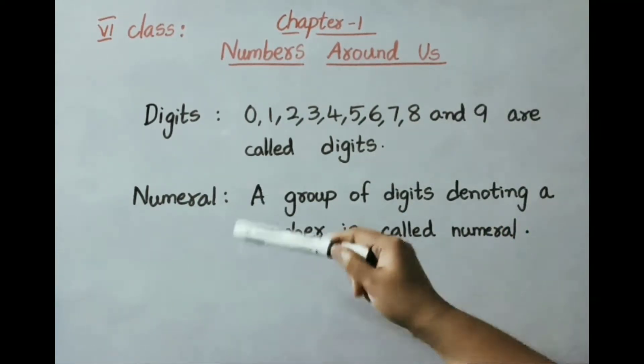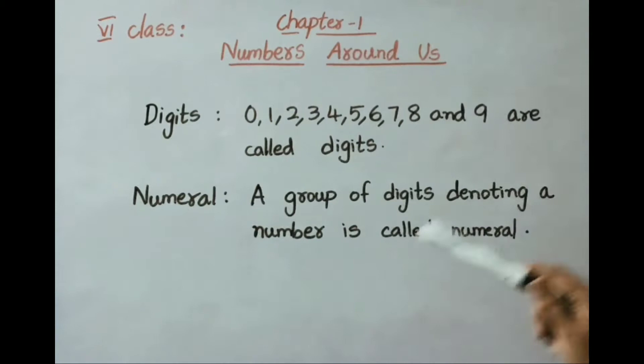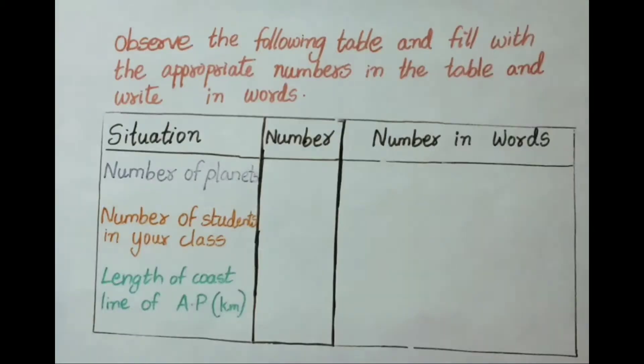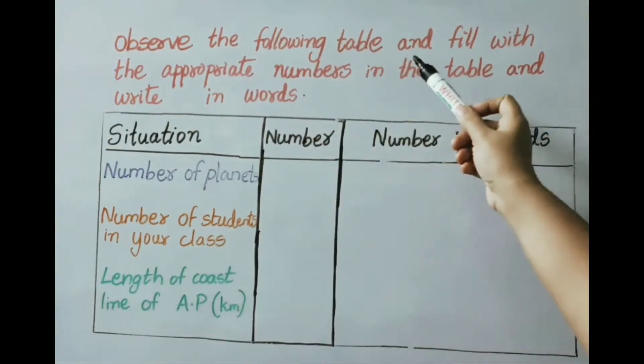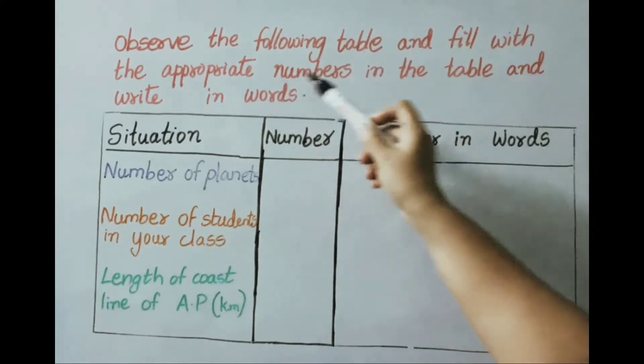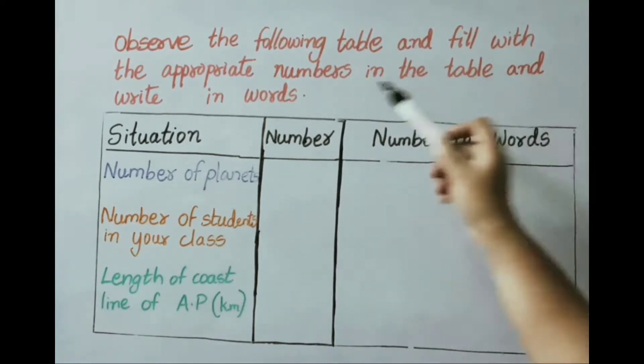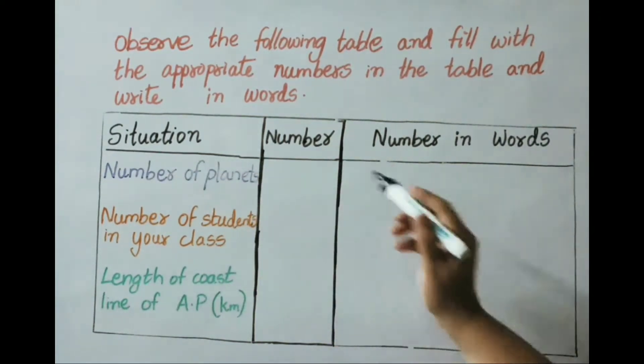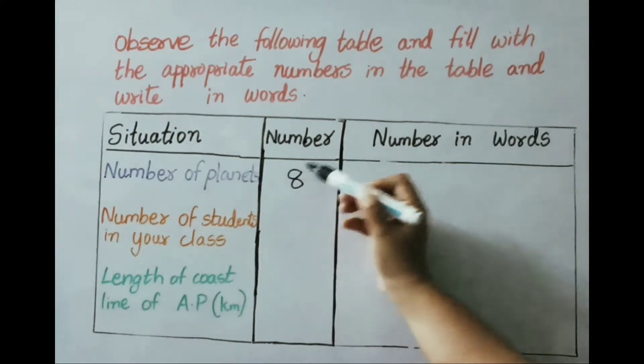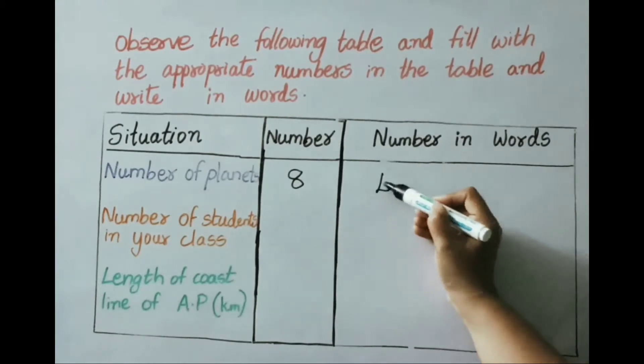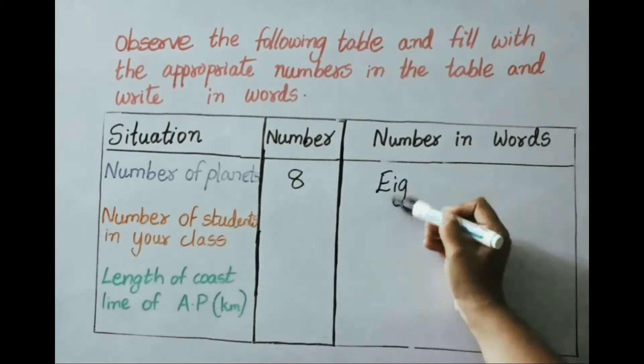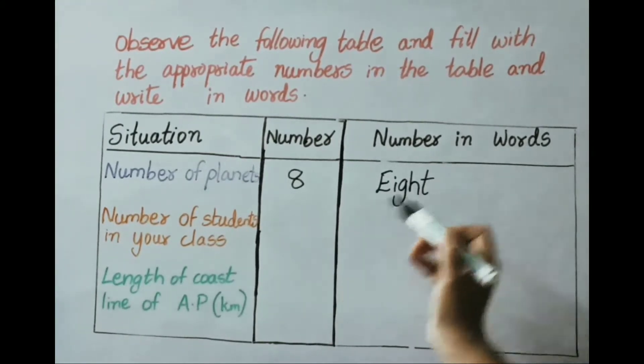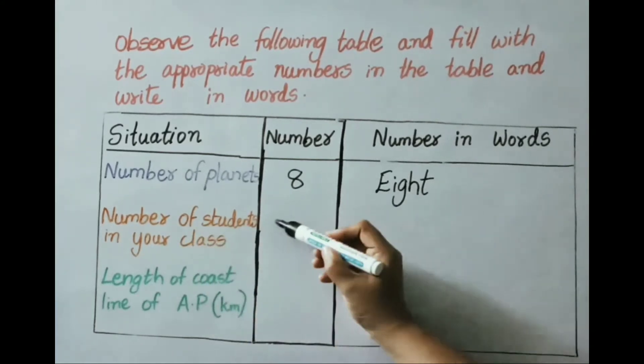A group of digits denoting a number is called a numeral. Observe the following table and fill with the appropriate numbers in the table and write in words. See the first one: situation number of planets is 8, so write down the number in words as eight. See the next one: number of students in your class, let us suppose 25 students.